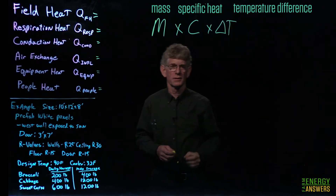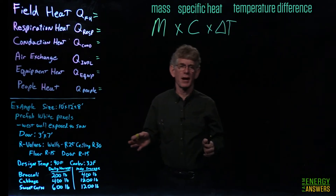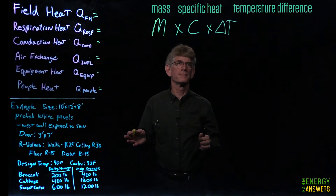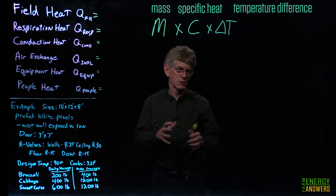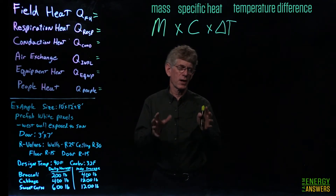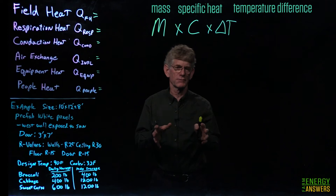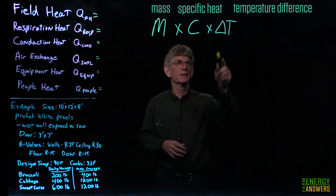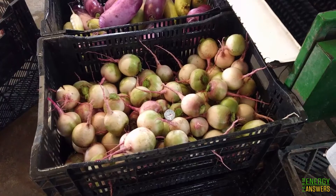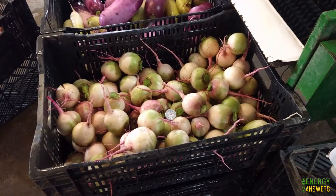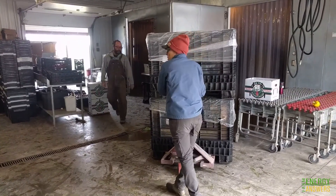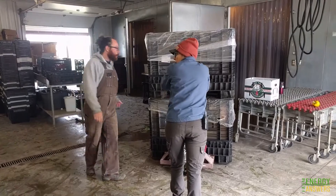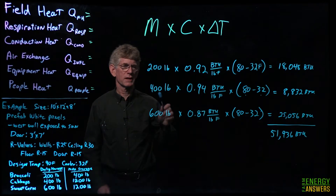Field heat is calculated as: mass × specific heat × temperature difference. The mass is the pounds of product going into the cooler in a 24-hour period. Specific heat is the energy required to reduce the product by one degree Fahrenheit, in units of BTUs per pound per degree Fahrenheit. The temperature difference is between the incoming field temperature and the target cooler temperature. This tends to be the biggest load in a cooler.